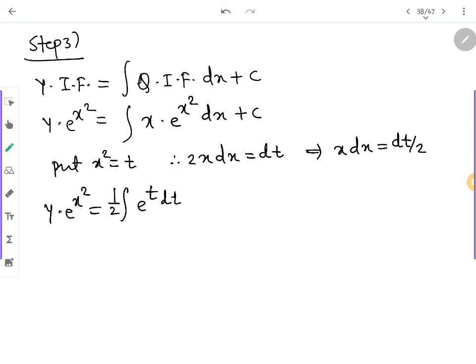This is a very famous substitution. y e raise to x square is equal to 1 upon 2 e raise to t dt. After this substitution, 1 by 2 e raise to t plus c. But the value of t is x square, so 1 by 2 e raise to x square.